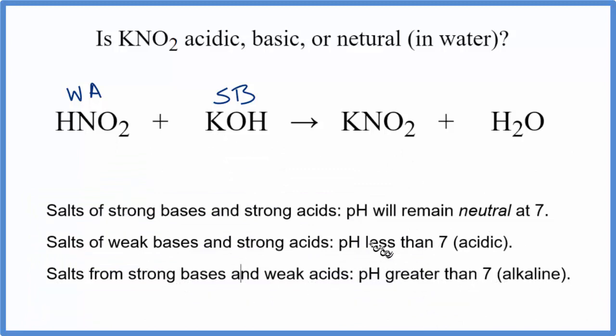Looking at our rules here, we're looking for a weak acid and a strong base. So here's a strong base but a strong acid, weak base. Here's a weak acid and a strong base. So this rule tells us if we have HNO2 plus KOH, we would expect the solution to be alkaline, greater than 7. So it's alkaline.